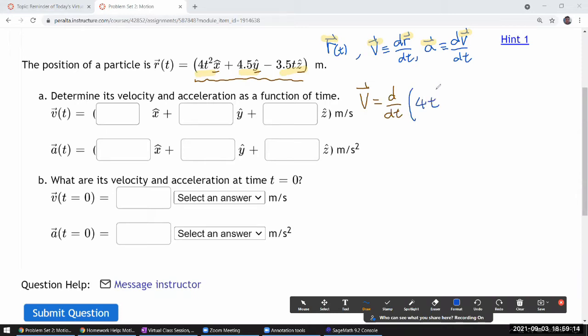4t squared x hat plus 4.5 y hat minus 3.5 t, z hat. And we're just going to assume the units will work out, so I won't bother with the units for this question, because whoever wrote the question didn't bother with the units either.